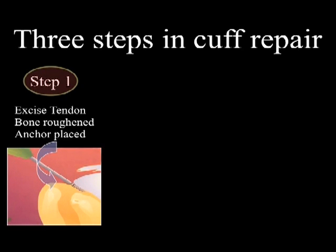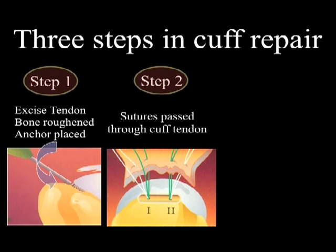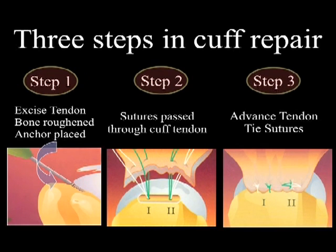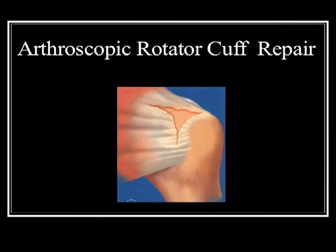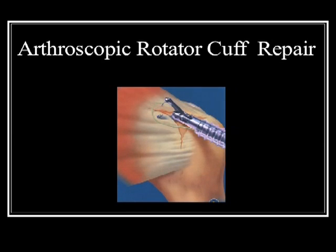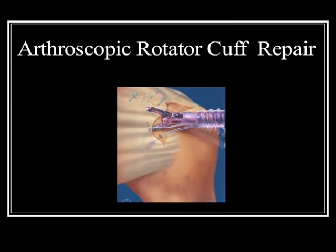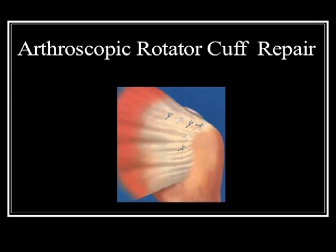The steps include the following: 1. Excise the lateral tendon stump, roughen the underlying bone, and insert a series of small composite anchors. 2. Pass the sutures held by the anchors through the remaining cuff. And 3. Advance and secure the remaining tendon into the roughened bone by tying the sutures. I repair cuff tears arthroscopically. Instead of larger incisions, small 1 cm portals are employed. The repair is performed through small plastic cannulas with specialized micro-instrumentation. At the end of the procedure, the cuff repair should look similar irrespective of technique.